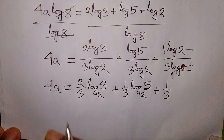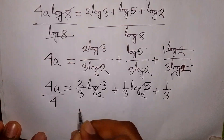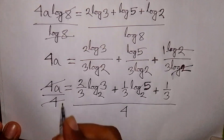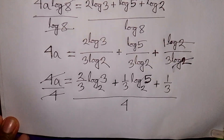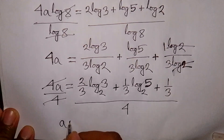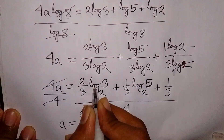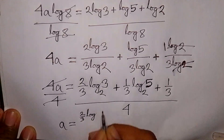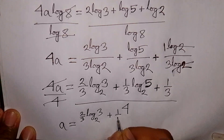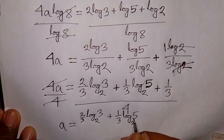Now we need the value of A, so we divide by 4 on both sides. This 4 will be cancelled, so A is equal to 2 over 3 times log base 2 of 3, plus 1 over 3 times log base 2 of 5, plus 1 over 3, all divided by 4.